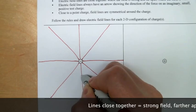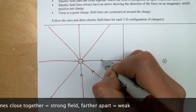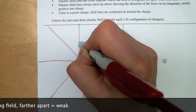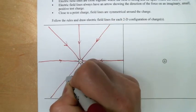Notice that the new field lines are closer together close to the charge, where the force is stronger, and farther away, far away from the charge, where the force is weaker.